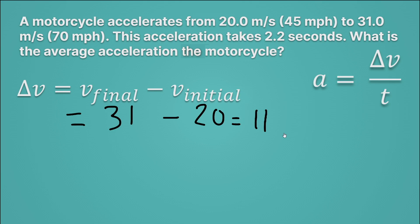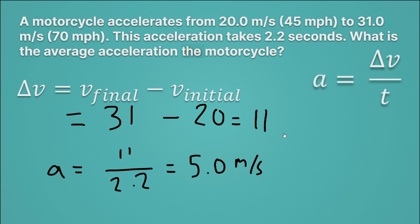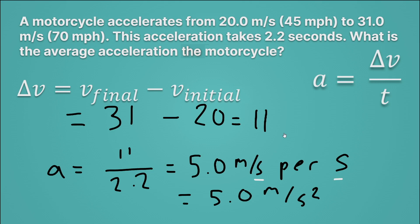Now we're ready to actually calculate acceleration, which is equal to the change in velocity — 11 — divided by the time, which is 2.2. When we divide those, we get 5.0, and that's meters per second per second. That looks kind of weird — meters per second per second. That means every single second, it gets 5 meters per second faster. Physicists write this as 5.0 meters per second squared — the squared tells us there are actually two separate seconds being combined.